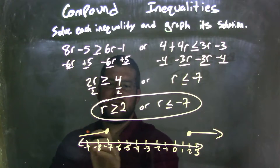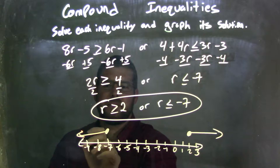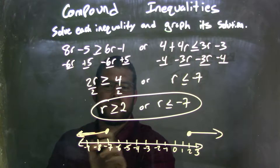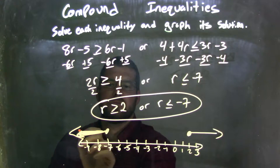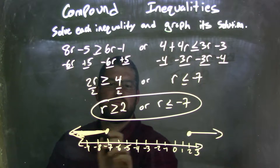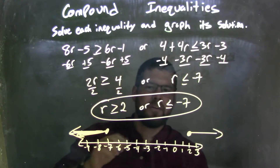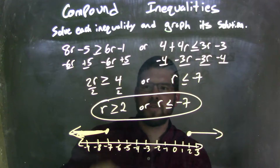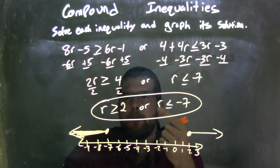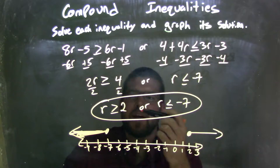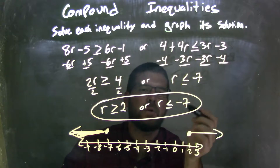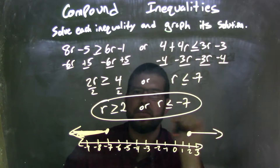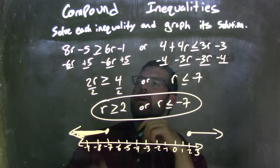And I put my arrow to the left because r is also less than negative 7. So now my graph matches my final answer, which is r is greater than or equal to 2, or r is less than or equal to negative 7.